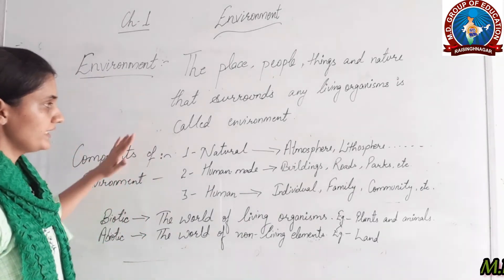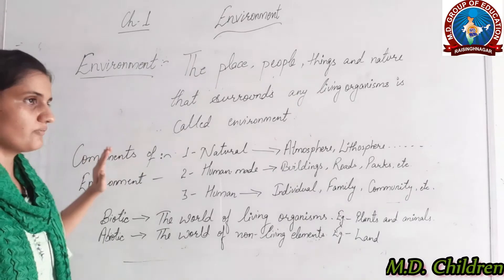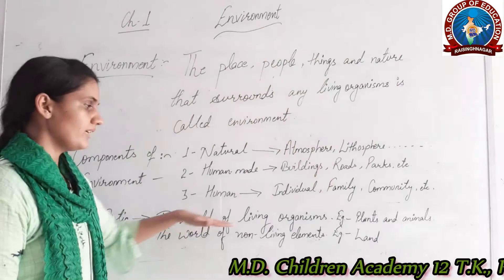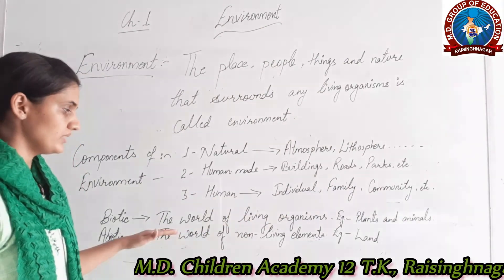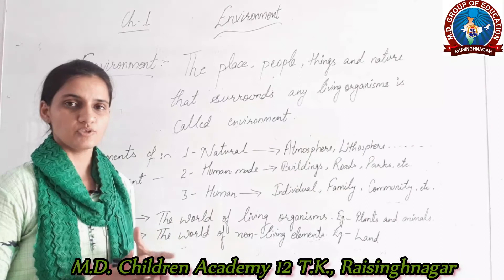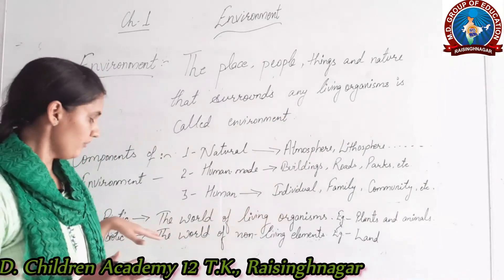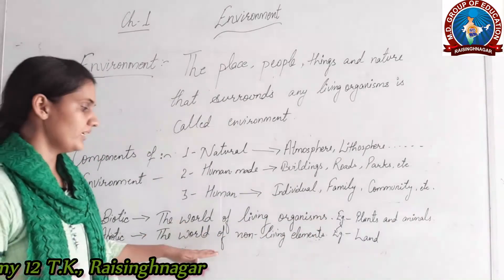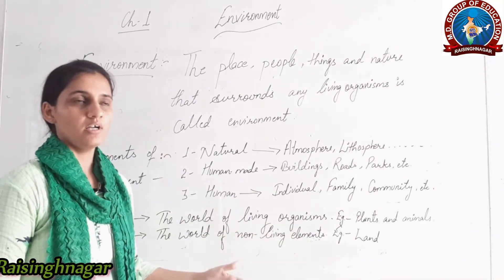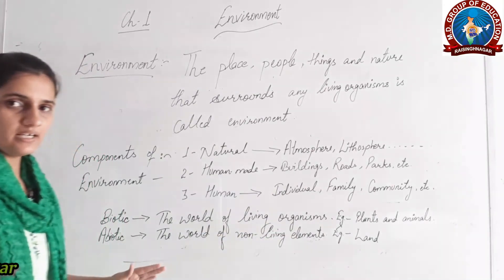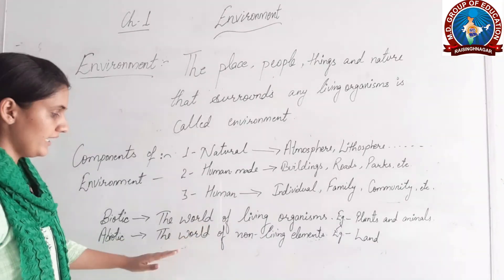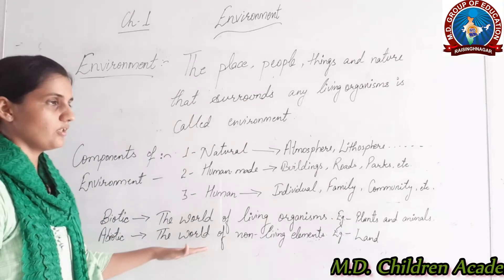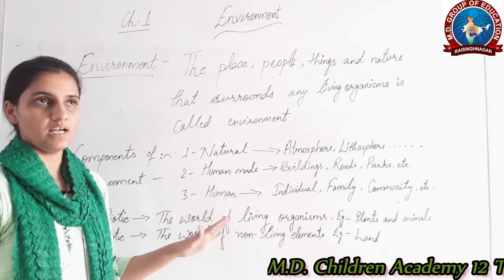Apart from these, we can also classify the environment into biotic and abiotic components. Biotic refers to the world of living organisms — examples are plants and animals. All living organisms that have life are biotic. Abiotic refers to the world of non-living elements such as land and rock, which do not possess life. So biotic includes all living organisms and abiotic includes all non-living elements present on earth.